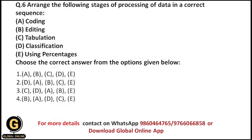Next question: arrange the following stages of data processing in the correct sequence. The stages given are: Coding, Editing, Tabulation, Classification, and Using Percentages. After collecting data we need to process it for further research. The first stage of data processing is editing — in the editing part, we remove ambiguous or unclear data, as well as any wrong information within the data.